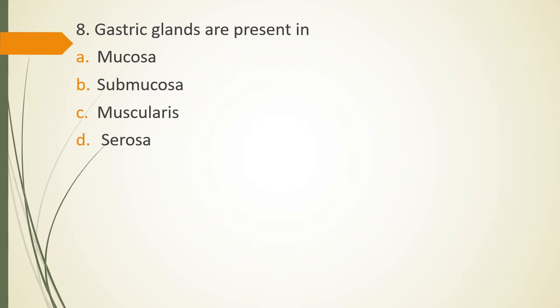Question 8. Gastric glands are present in? Option A, Mucosa, Option B, Submucosa, Option C, Muscularis layer, Option D, Serosa. Gastric glands are present in? The correct answer is Option A. It is present in mucosa.